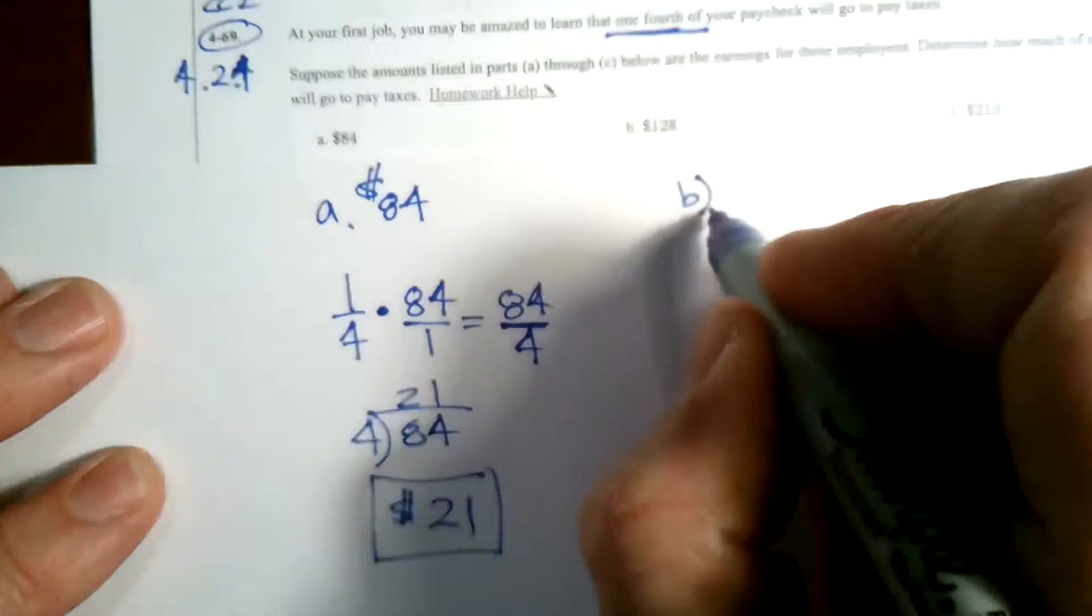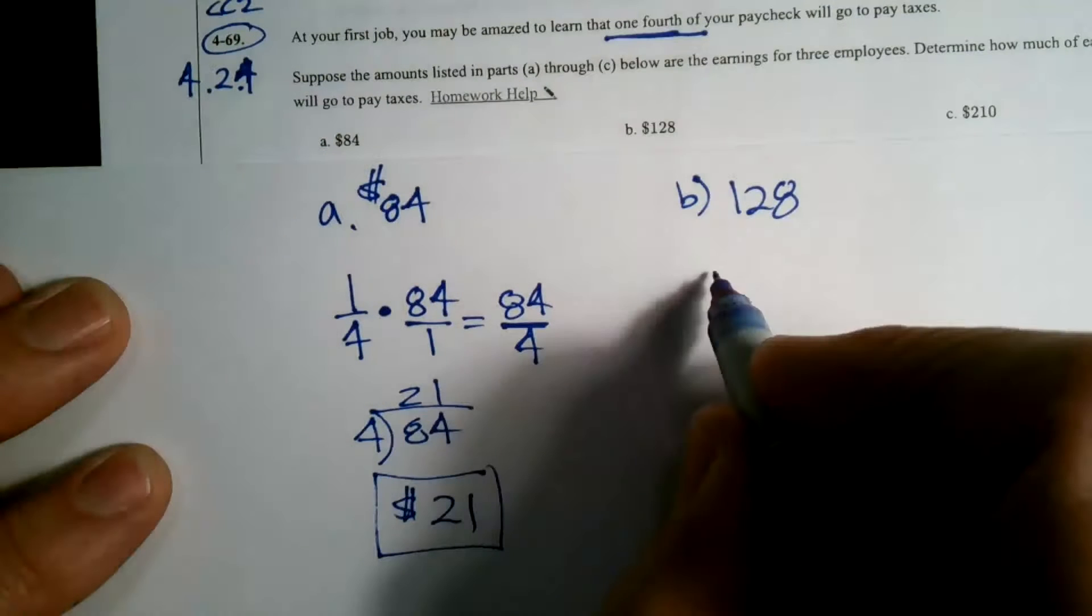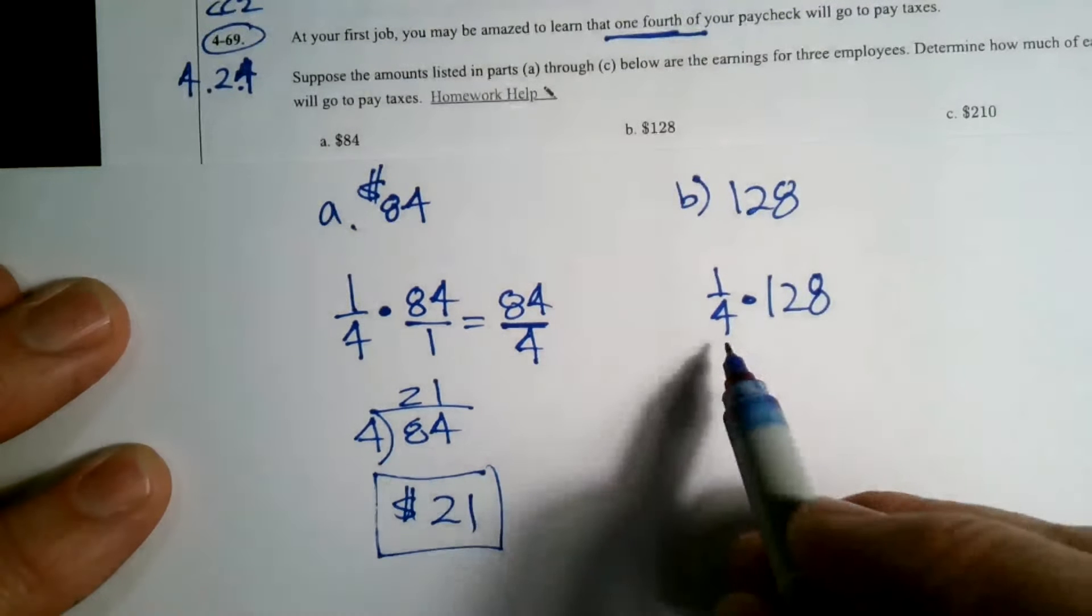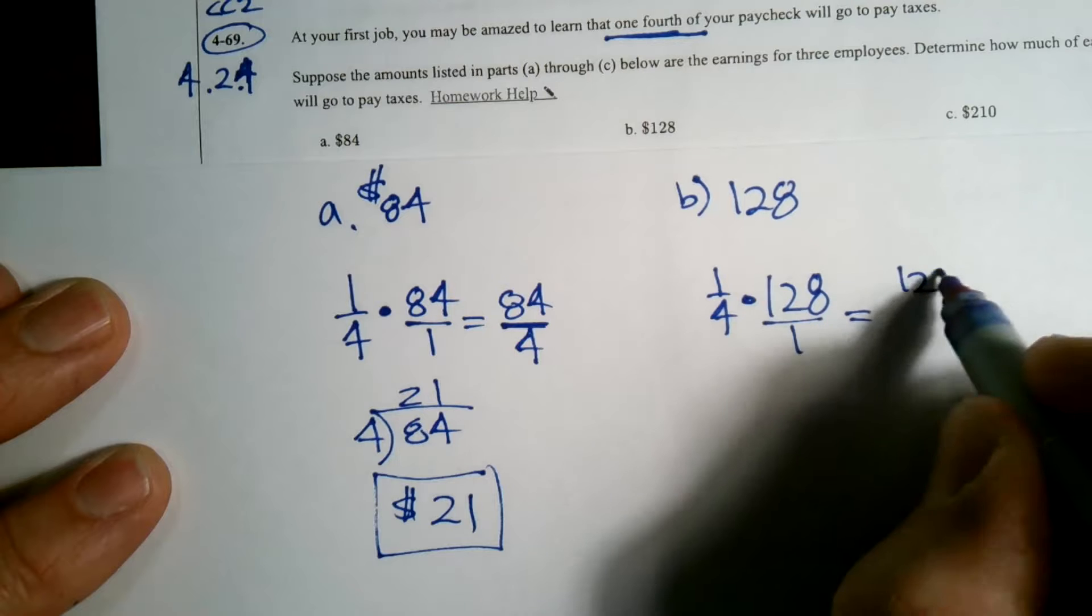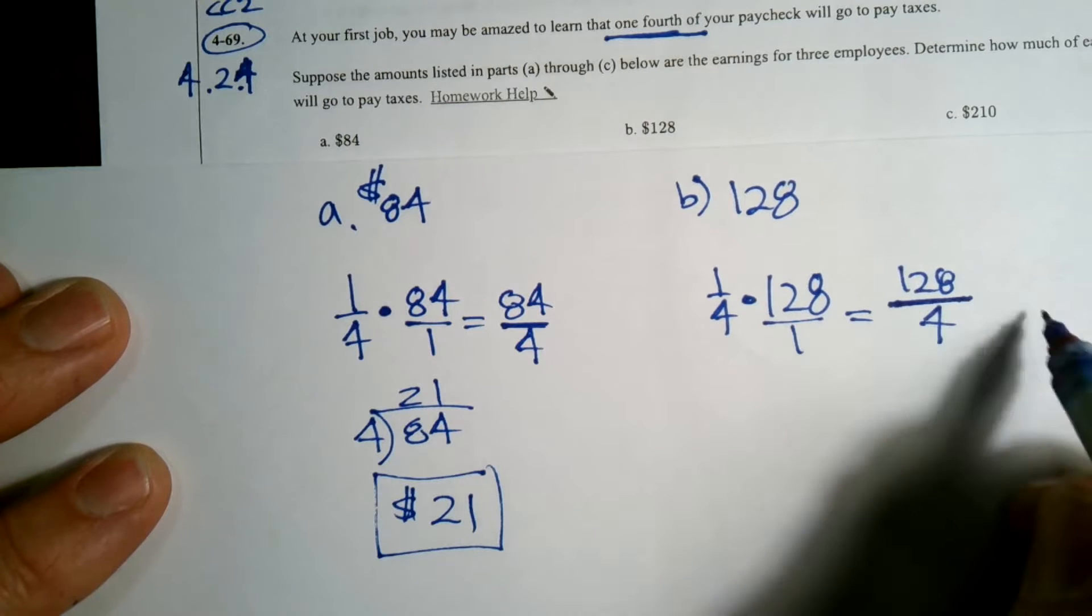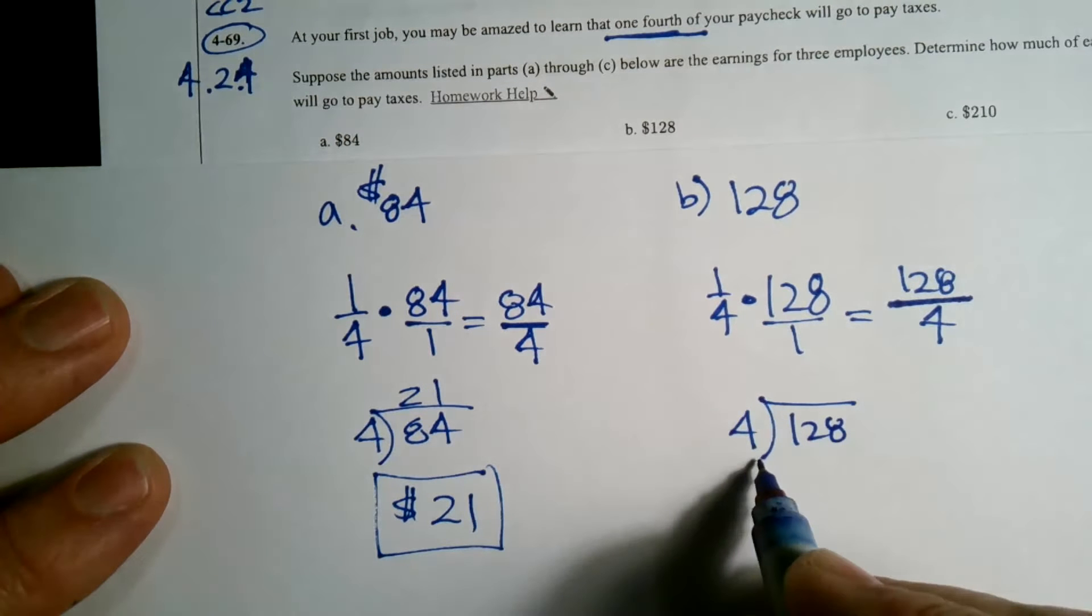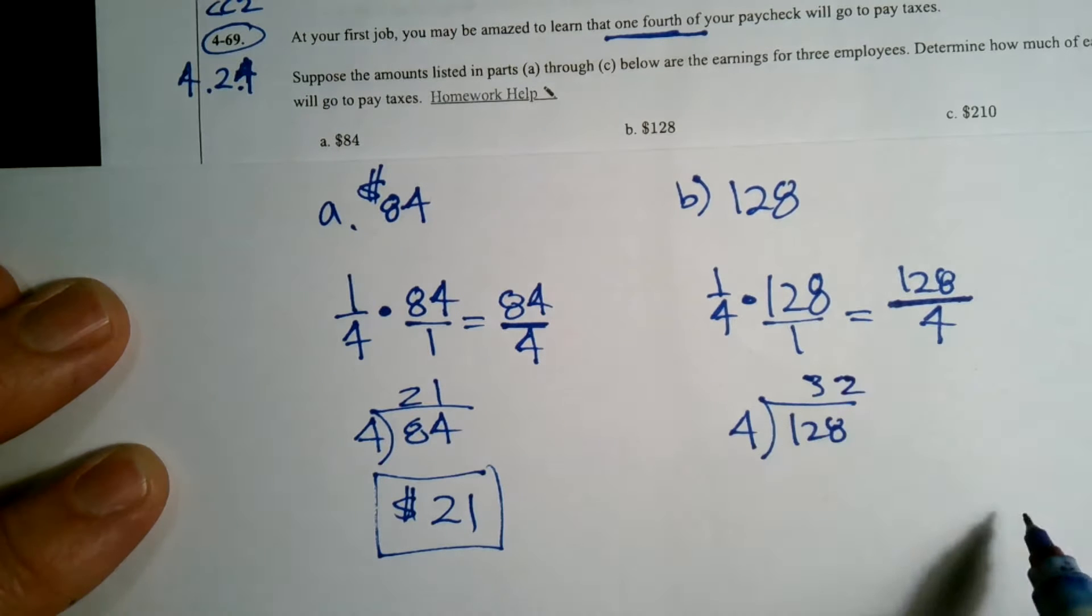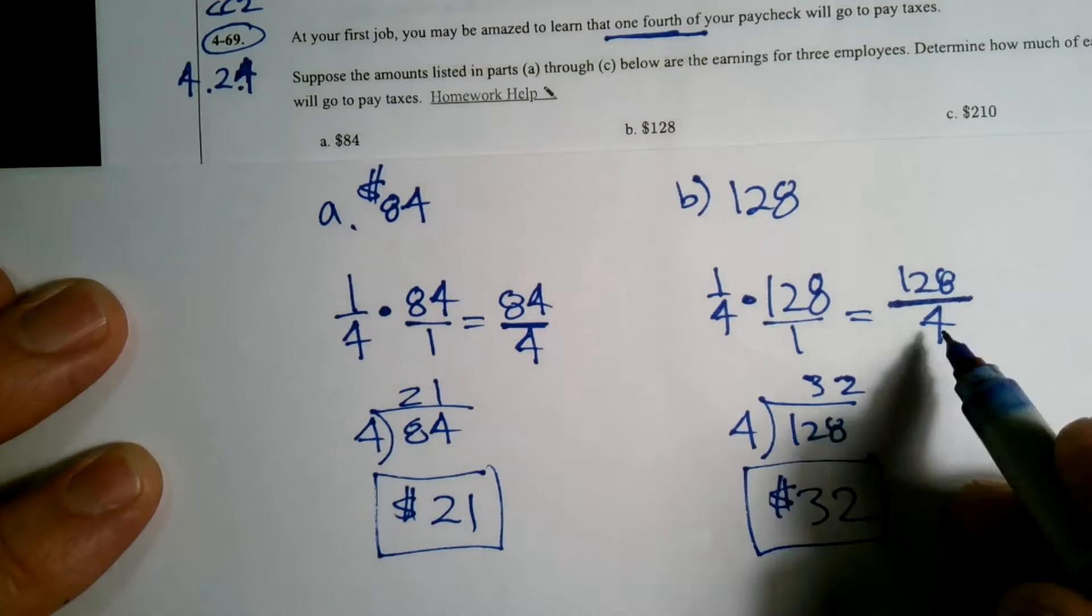So for B, the amount of the paycheck is 128. So again, what's one fourth of 128? We have multiplication of a fraction times the whole number, put the whole number over one, multiply straight across 128 over four. Again, the fraction bar is the division symbol. So I want to know how many times is 128 divided by four? Four goes into that 32 times. So we have $32 goes to taxes if your paycheck is 128.